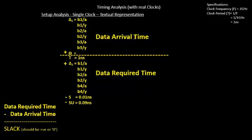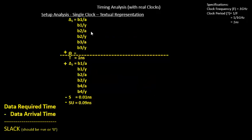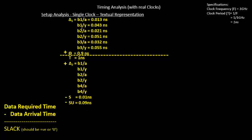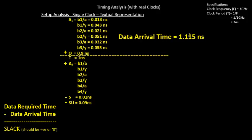Let's add some numbers. For the launch clock path: B1 of A is 13 picoseconds (0.013 ns), B1 of Y is 43 picoseconds (0.043 ns), B2 of A is 21 picoseconds, and so on. The combinational delay is 0.9 nanoseconds. Adding all the launch path values together, the data arrival time comes to 1.115 nanoseconds. You can verify this with a calculator.